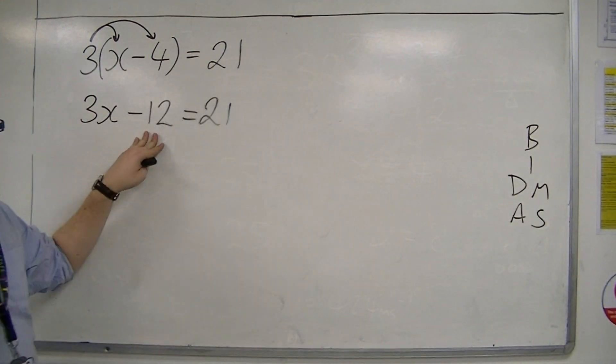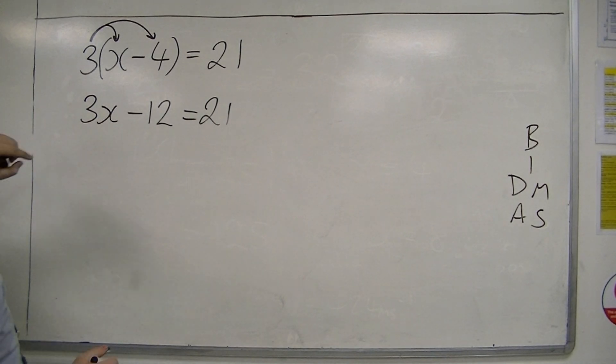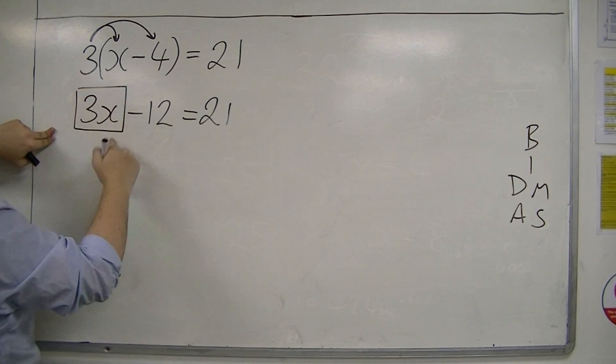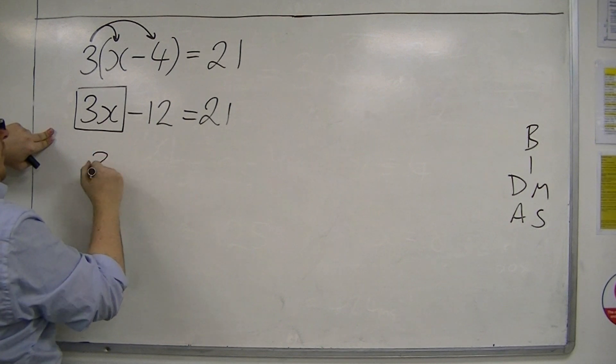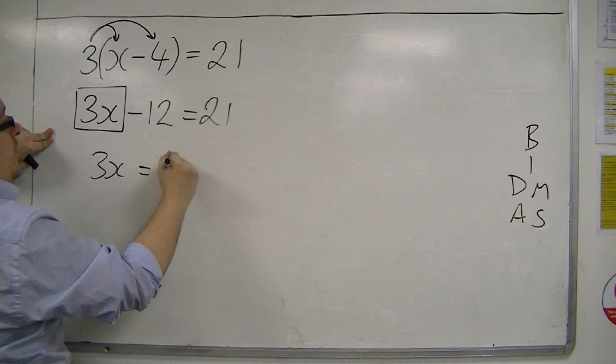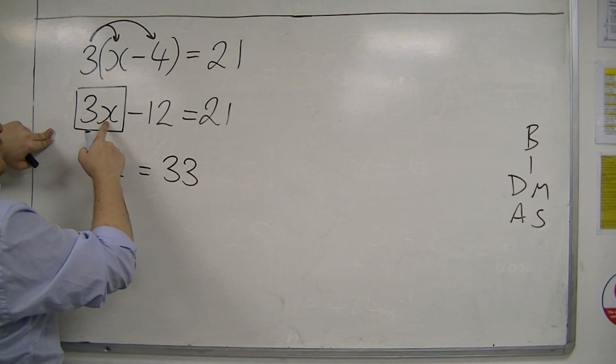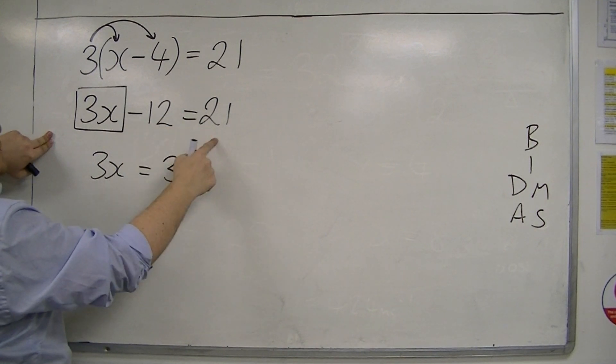So, I've spotted that I've got a subtraction, so that's what I deal with first. Something take away twelve is twenty-one, so the something must be thirty-three. Thirty-three take away twelve is twenty-one.